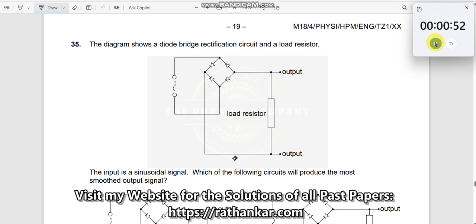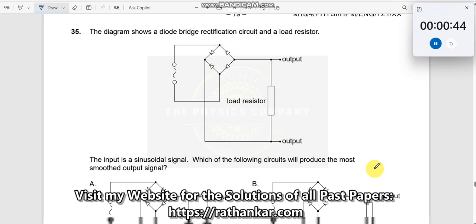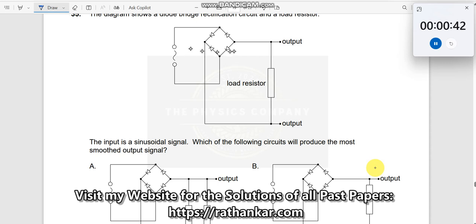Rectification circuit is here and the input is a sinusoidal wave. Which of the following circuits will provide the most smoothened output signal? So what do you mean by smoothened output signal? See the output signal that you get from this circuit will look like this. It's a full wave rectifier. You will get a signal like this over here. But what does he need? He needs a smoothened which means what? He doesn't want these ripples but instead you want something like this, a straight one. Right. A regulated DC.